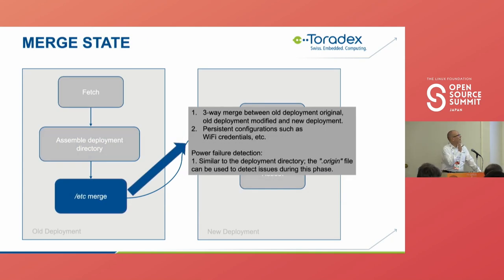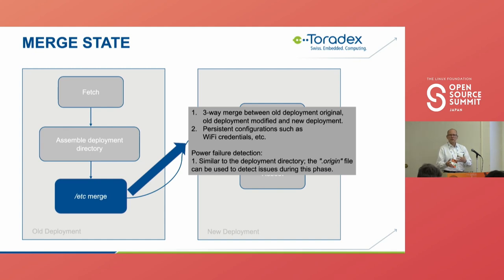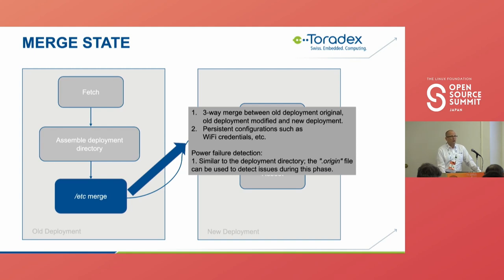After creating a complete new deployment directory, we have the three-way merge of the /etc directory. The system looks at the unmodified /etc configuration files from the old deployment, the unmodified /etc from the new deployment, and any files modified in the active running system, then does a proper three-way merge to pull in new changes and preserve field modifications. Similar to the previous phase, a data origin symlink is used to determine when this phase has completed — once the three-way merge completes, the system creates that symlink and can detect on which side of a power failure it was sitting.